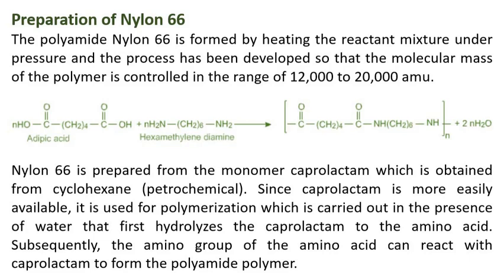Nylon-66 is prepared from the monomer caprolactam, which is obtained from cyclohexane petrochemical. Since caprolactam is more easily available, it is used for polymerization, which is carried out in the presence of water that first hydrolyzes the caprolactam to the amino acid. Subsequently, the amino group of the amino acid can react with caprolactam to form the polyamide polymer.